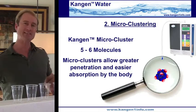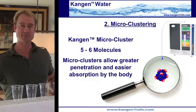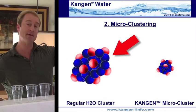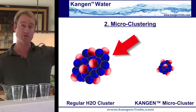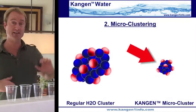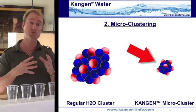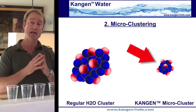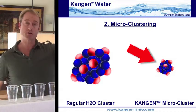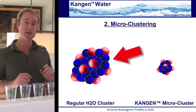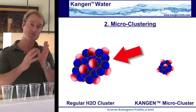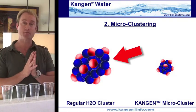I like to relate this to baseball. If you threw baseballs at a chain-link fence, not many of the baseballs are going to make it through. But if you threw marbles at a chain-link fence, a lot of the marbles are going to make it through. The marbles represent the kangen water, the baseballs represent regular water, and the fence represents the cells of your body.